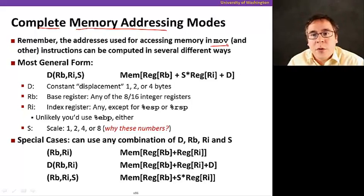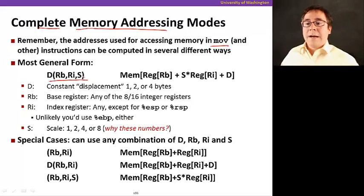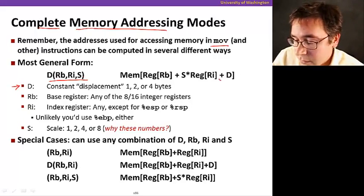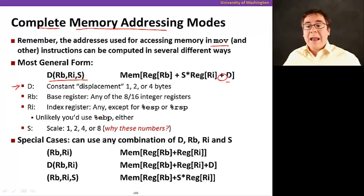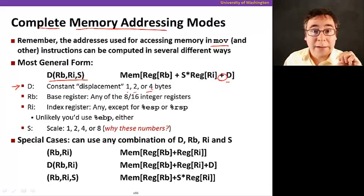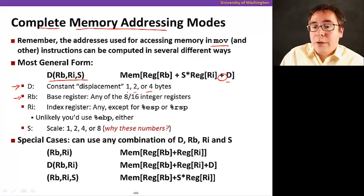Now we're going to see the complete addressing mode supported by x86. So this is how addresses are used for accessing memory in the move instructions, and we saw a lot of them in the previous examples. The most general form of addressing mode in x86 is the following form. We have D is a constant displacement, something that's added to the final address. This is a constant that has to be one, two, or four bytes. That's a constant displacement. That doesn't mean that it can be only off by four bytes. It means that the displacement distance itself has to be a value of one, two, or four bytes.